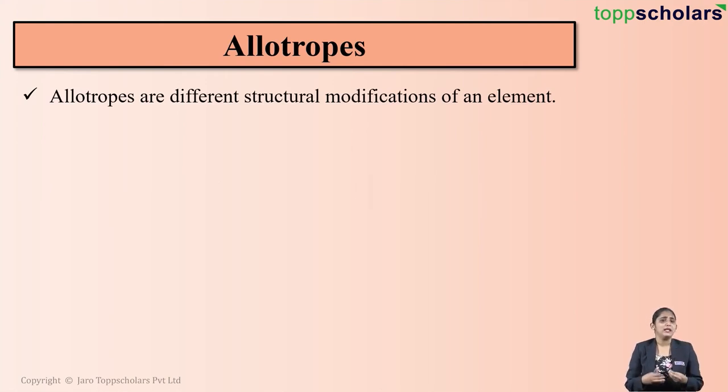Allotropy is simply a phenomenon wherein an element exists in two or more different forms that is in the same physical state, but these different forms have the same chemical properties but differ in their physical properties.